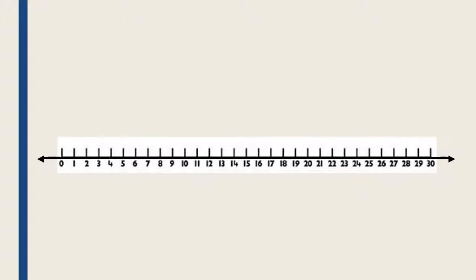This is the number 30. This is a number line. A number line helps you count in order. Let's count to 30 on the number line.